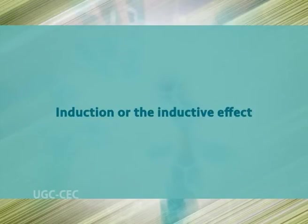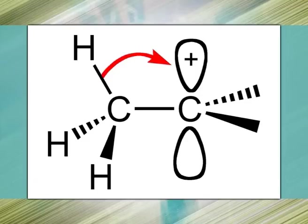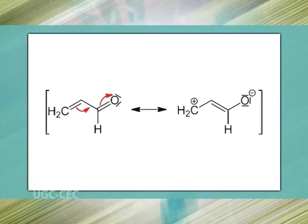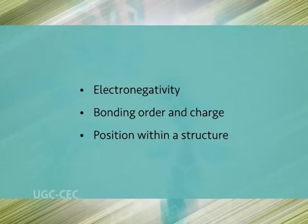The inductive effect is the transmission of charge through a chain of atoms in a molecule, resulting in a permanent dipole in a bond. Covalent bonds can be polarized depending on the relative electronegativity of the atoms forming the bond. The electron cloud in a sigma bond between two unlike atoms is slightly displaced towards the more electronegative atom, giving it a fractional negative charge (δ–) and the less electronegative atom a fractional positive charge (δ+). The inductive effect of an atom or functional group is a function of that group's electronegativity, bonding order, and charge position within the structure.